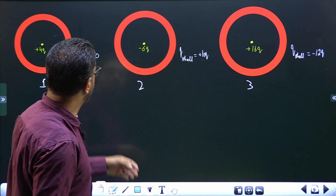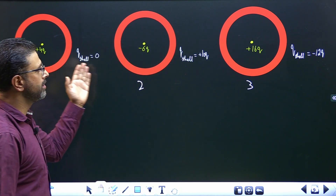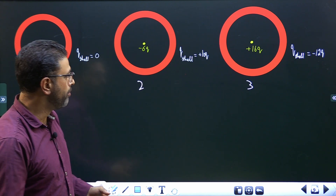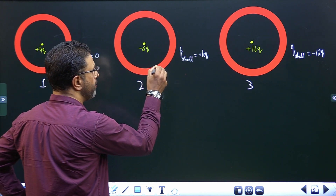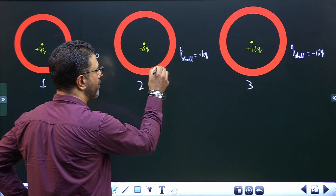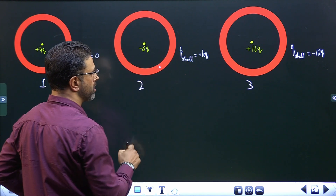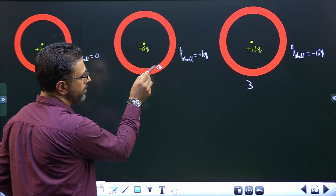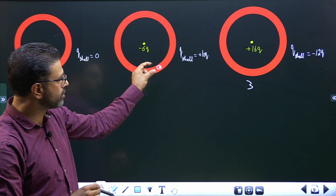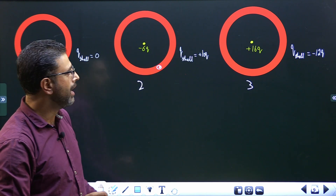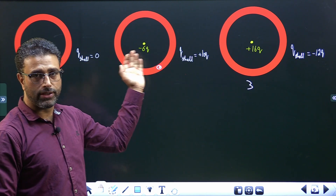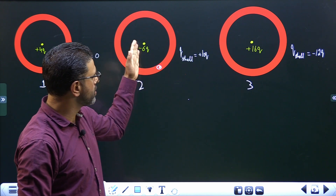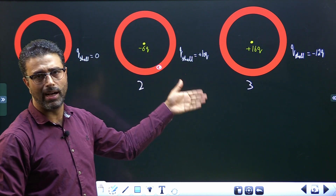This time, we have to rank the three situations according to the electric field. Part A: midway, halfway through the shell — that means at the midpoint in the thickness of the shell — in all three cases. And then, part B: outside the shell, at a distance of twice R.